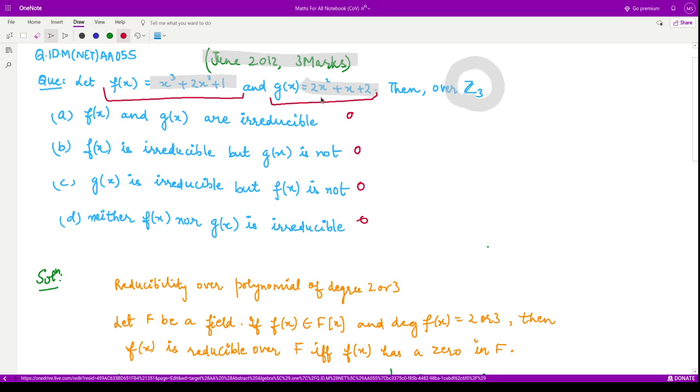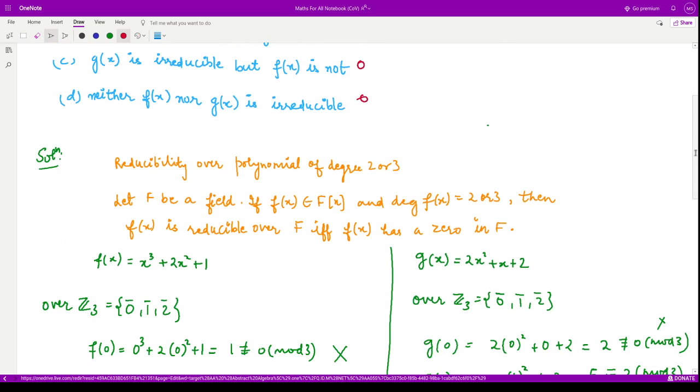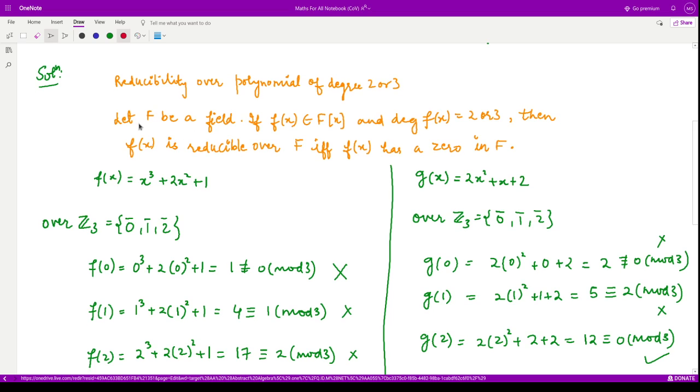For this, as you can see, the degree over here is 2 and degree over here is 3. Therefore, we have this result explicitly for polynomials with degree 2 or 3, which states that if F is a field, which in our case is given to be Z₃, the integer modulo 3, and f(x) is given to be some function in the field, and the degree of f(x) is equal to 2 or 3, which these all conditions are satisfied with our polynomials f(x) and g(x), then they are saying that polynomial is reducible if and only if it has a zero in F.